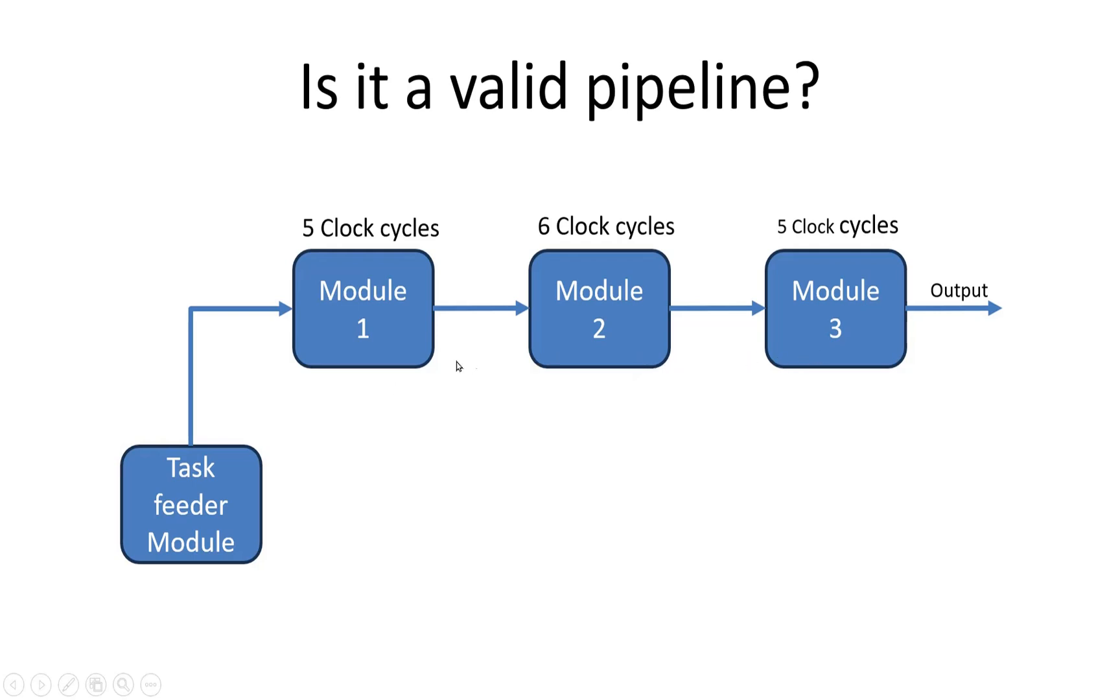Similarly, module 2 may have a variable delay depending on the task type, and module 3 can have a variable delay depending on the task type. Let me write the exact numbers: module 1 can take 3 to 5 clock cycles depending on the task type.